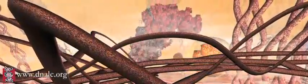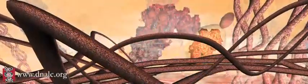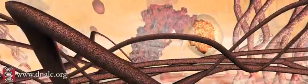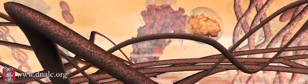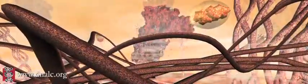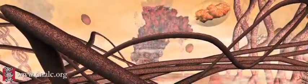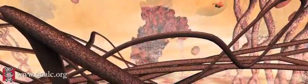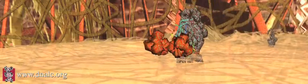The vesicle fuses with the cell membrane, dumping the proteins outside the cell. The released proteins will signal surrounding cells or, in some pathways to cancer, will coax the cell into further action.